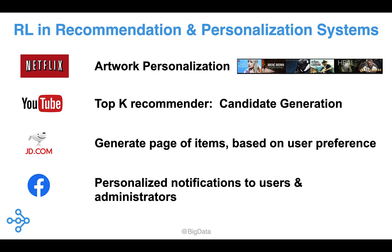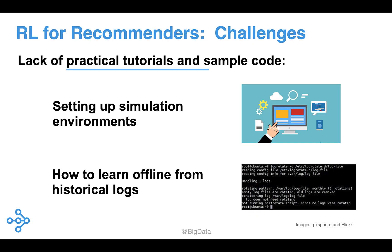This is just a partial list of companies who have incorporated RL into recommenders. They have had to overcome several challenges in order to integrate reinforcement learning into their large-scale recommendation systems. These early examples have drawn a lot of interest, but broad adoption will require access to open-source tools, sample code, and tips for how to overcome challenges specific to RL, such as setting up simulation environments or how to learn from historical logs.